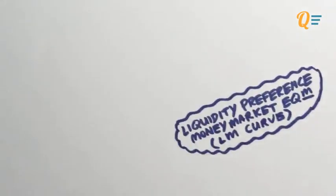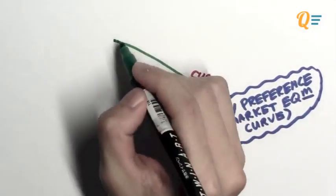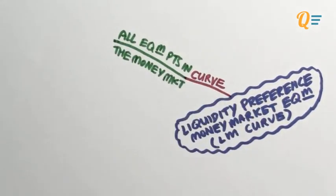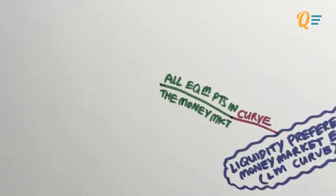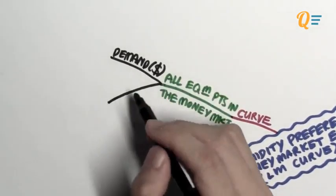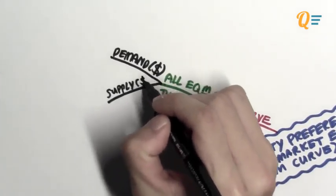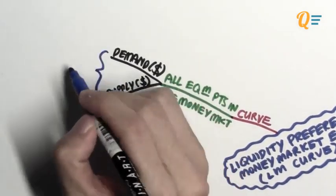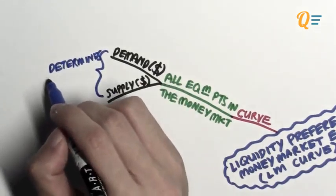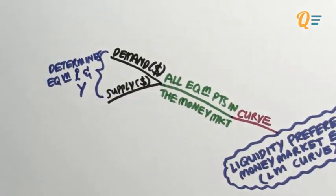So what is the LM curve? The LM curve is simply a curve which shows all the equilibrium points in the money market. There is equilibrium in the money market when the demand for money meets the supply of money. When there is equilibrium in the money market, we obtain the equilibrium level of interest rates, income as well as real money circulating in the economy.